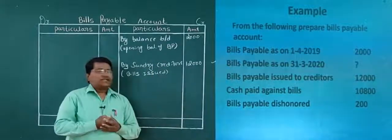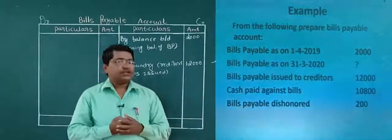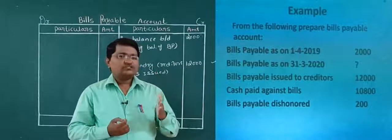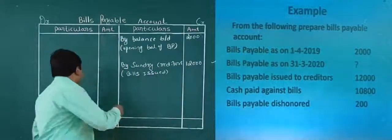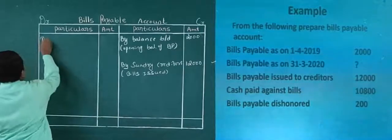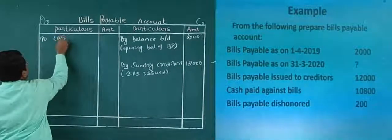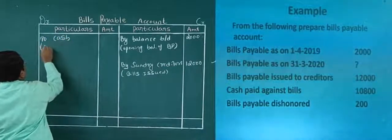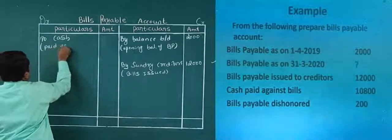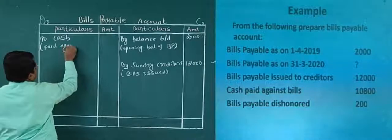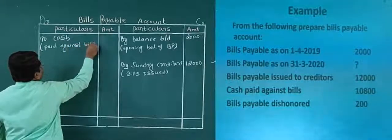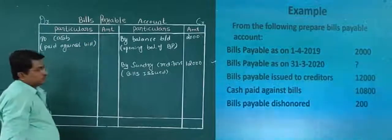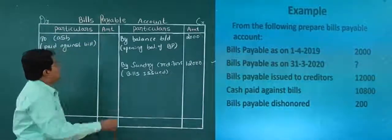Next, cash paid against bill — which side do we record it? Yes, very good — it is recorded on the debit side. So I will write here: to cash (paid). The amount is rupees 10,800.